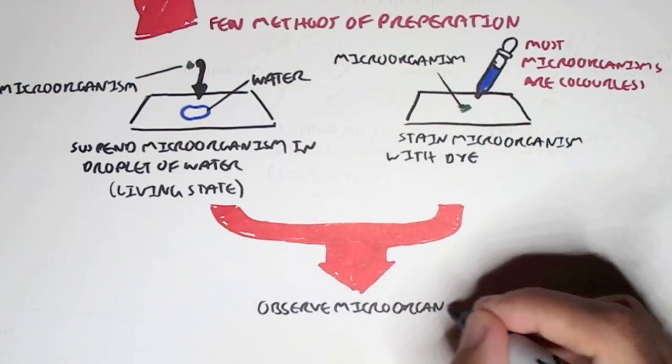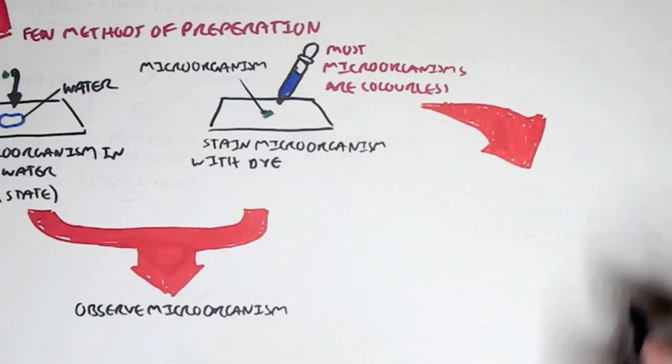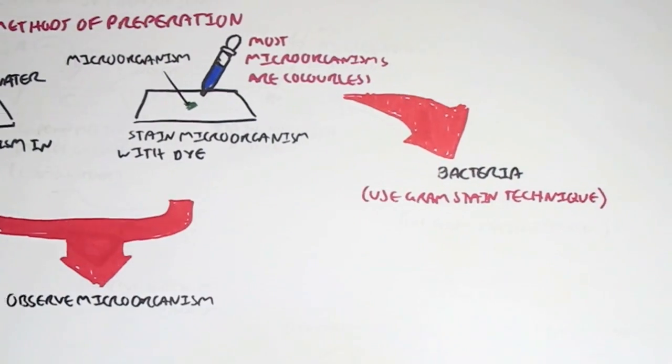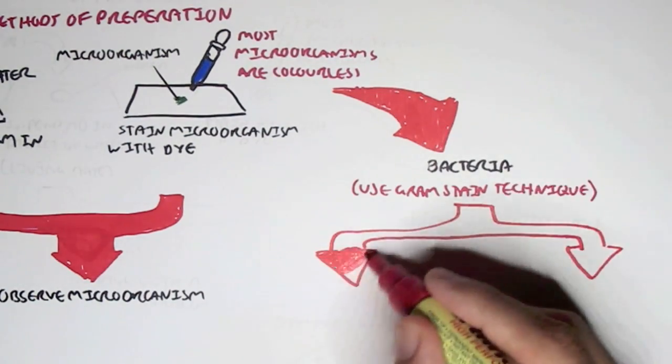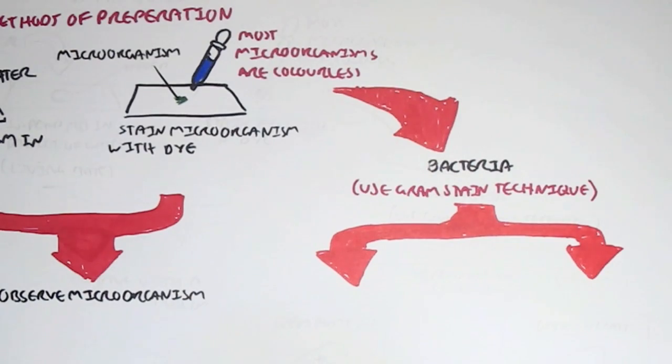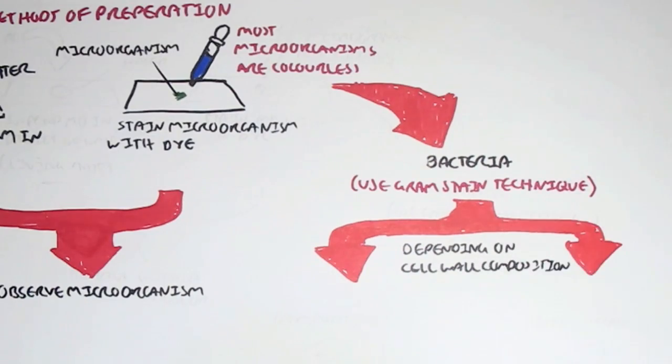Now, this dyeing technique, which is to color a microorganism, is actually really important in classifying bacteria into two major groups. And the technique we use for dyeing is called the Gram stain technique, when we use a particular dye, which colors the bacteria in different colors depending on the cell wall composition.